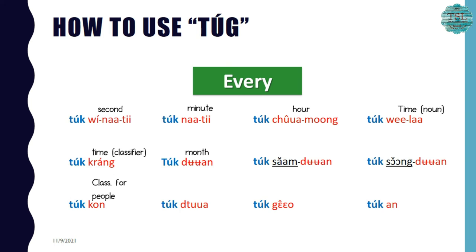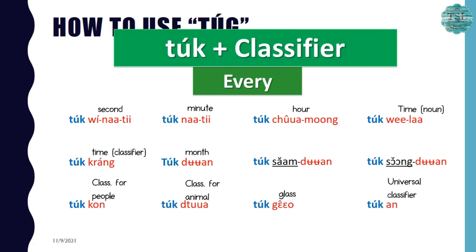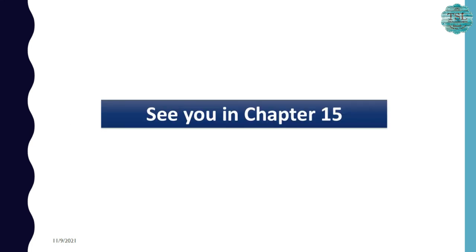Then ทุกคน — คน is the classifier for people — so ทุกคน means 'everybody' or 'everyone.' ทุกตัว — ตัว is the classifier for animals, clothes, and furniture — so ทุกตัว means 'every animal' in this context. ทุกแก้ว — แก้ว means 'glass' — so ทุกแก้ว means 'every glass.' And the last one, ทุกอัน — อัน is a universal classifier meaning 'piece of something' — so ทุกอัน means 'every piece' or 'everything.' So the pattern is ทุก plus a classifier. This is all of Chapter 14 — see you in the next chapter!